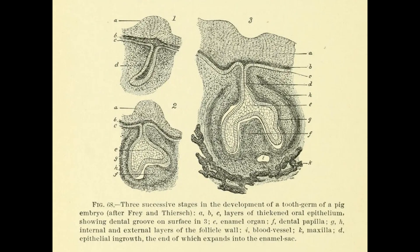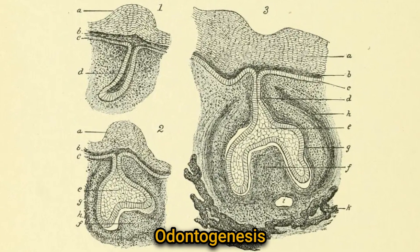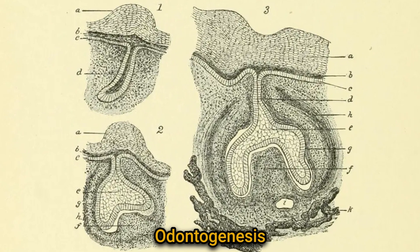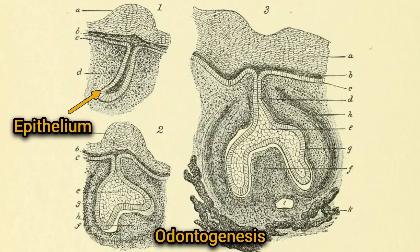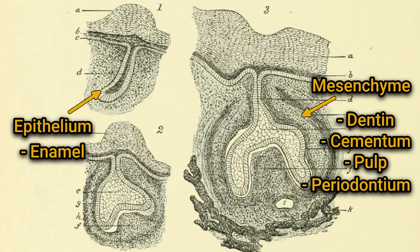So how does all this form? The development of a tooth, or odontogenesis, is the result of coordination between two embryonic tissues: the epithelium, which is ectodermal, and the underlying mesenchyme, which is mesodermal. The enamel comes from the epithelium, while pretty much everything else — the dentin, cementum, pulp, and the periodontal ligament — comes from the mesenchyme.